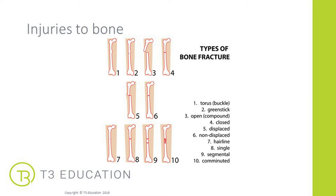This is a good visual example of the different types of fractures — you can see slightly different versions depending on what has happened. There are a few more in this image: a torus fracture, which is a buckle within the tissue; number five is displaced, where the bones are displaced against each other; number seven is a hairline fracture; number two is a greenstick; and number eight is a single fracture, similar to the simple fracture. Knowing and understanding these can help support us when treating clients with sports massage after a fracture.